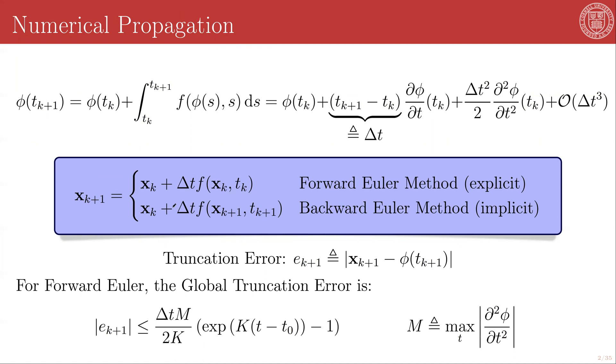Or alternatively, we can write down the same kind of scheme, except we can evaluate our function at the next iterative time point, f(xₖ₊₁, tₖ₊₁). This is known as the Backward Euler method, and this is implicit because we would have to invert this function, usually iteratively, sometimes if we're lucky analytically, in order to be able to propagate this forward.